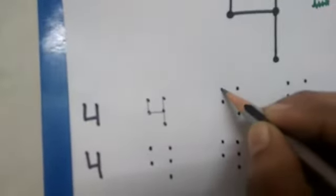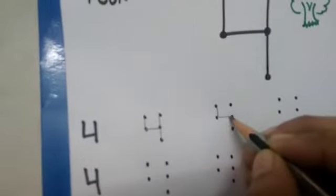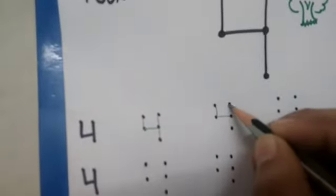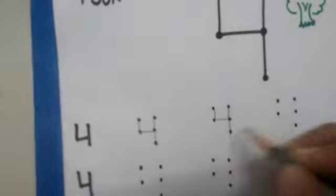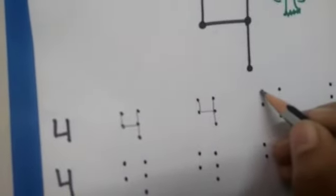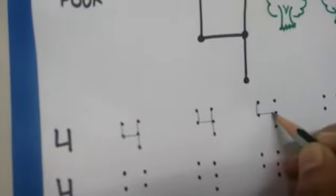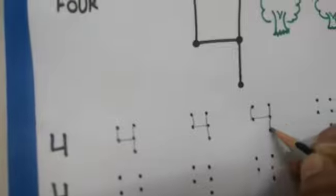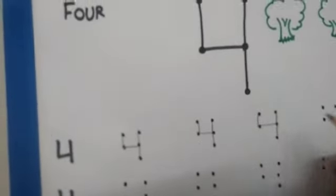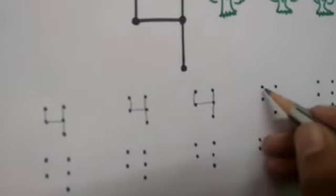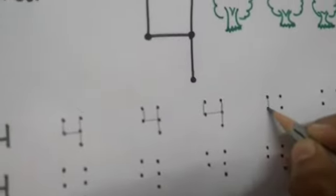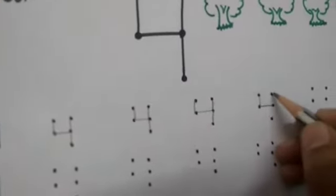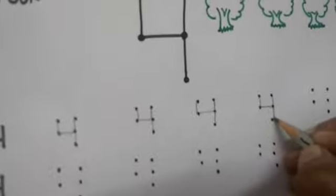So again — standing line, sleeping line, and one more standing line. Connect the dots — standing line, sleeping line, and one more standing line. This is how to write number 4.